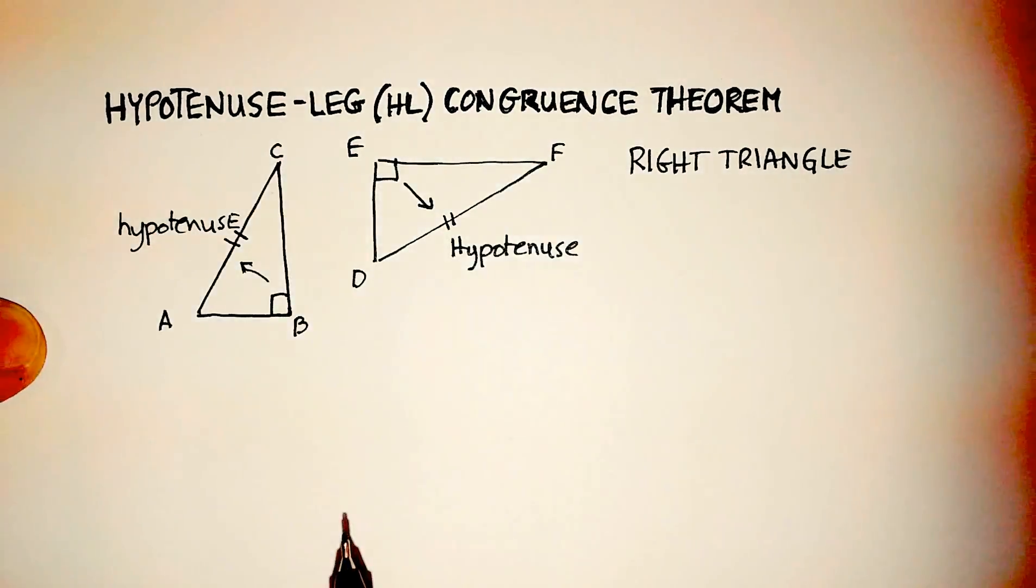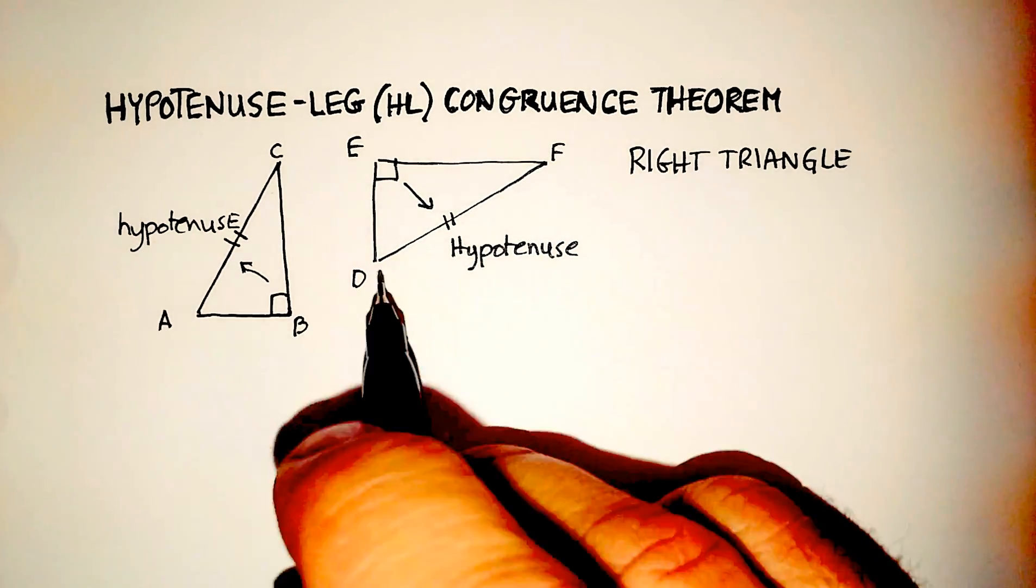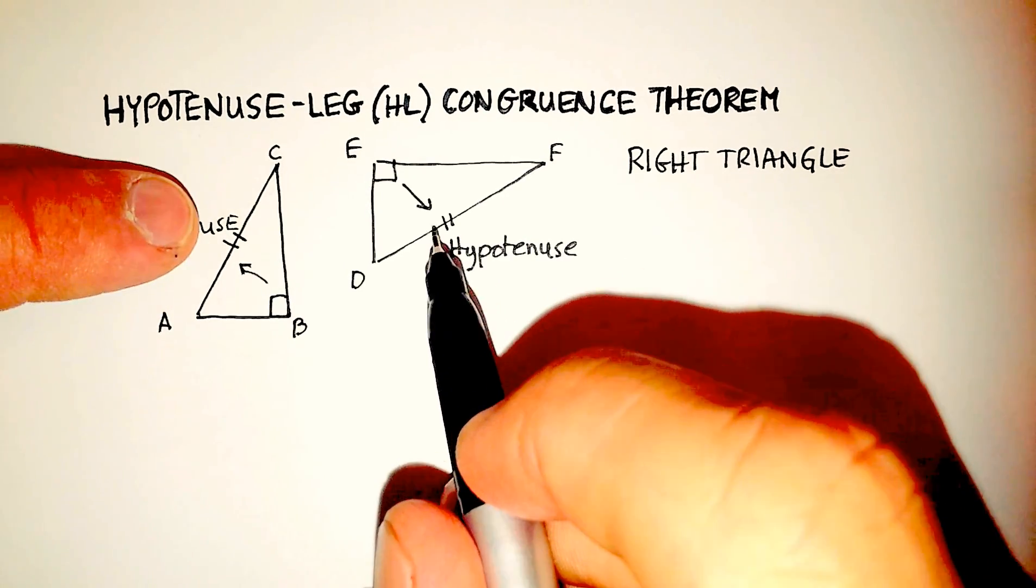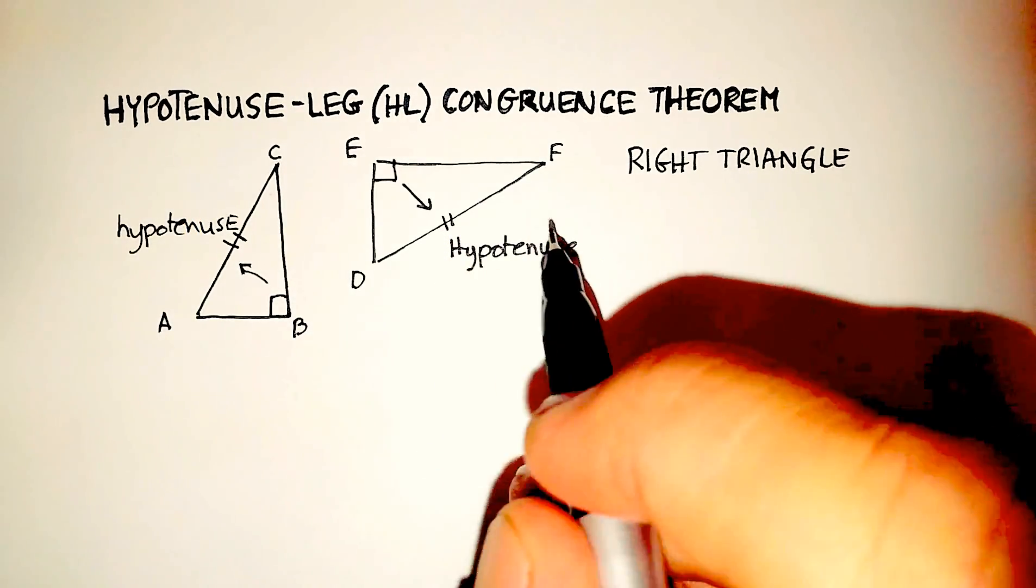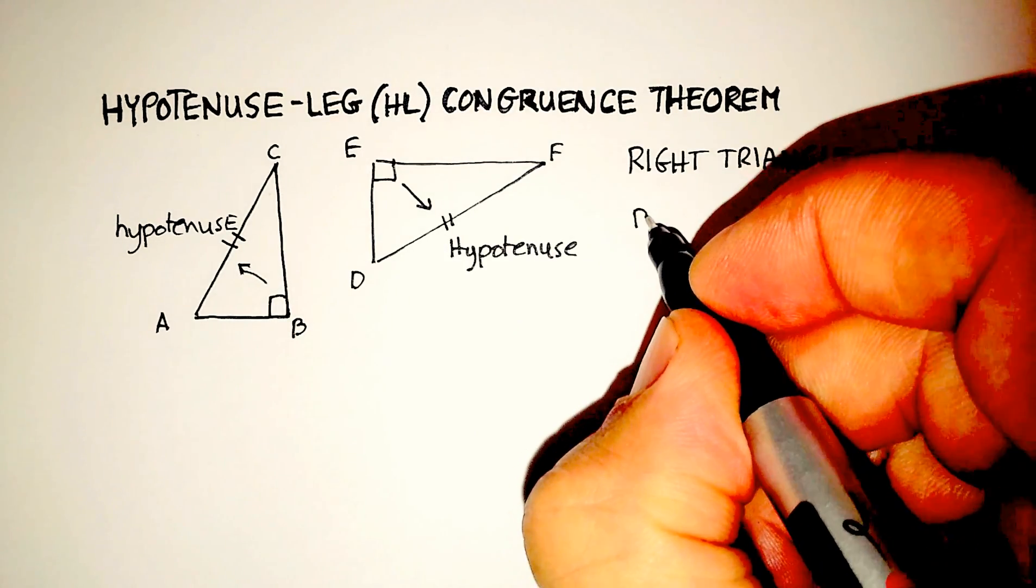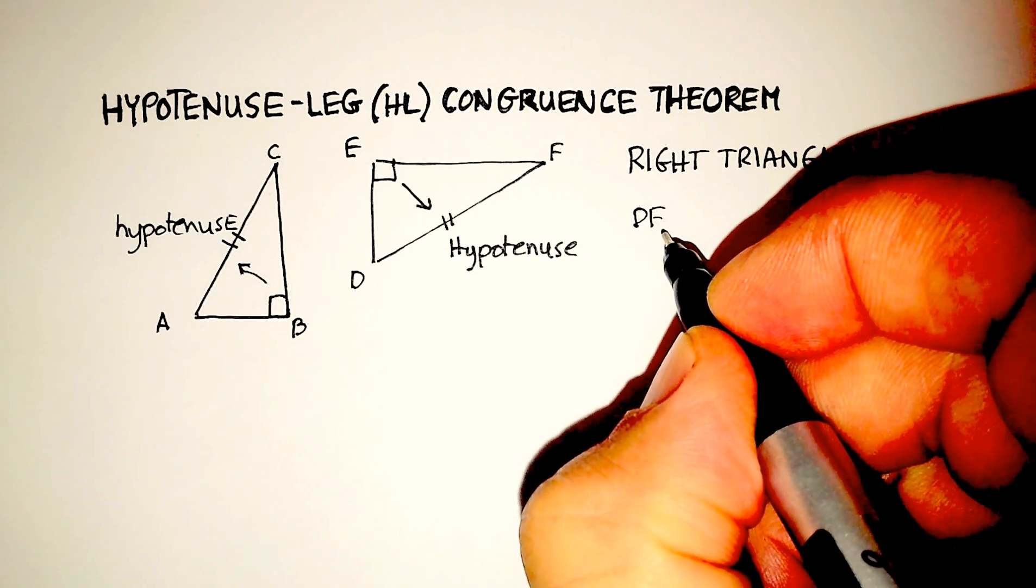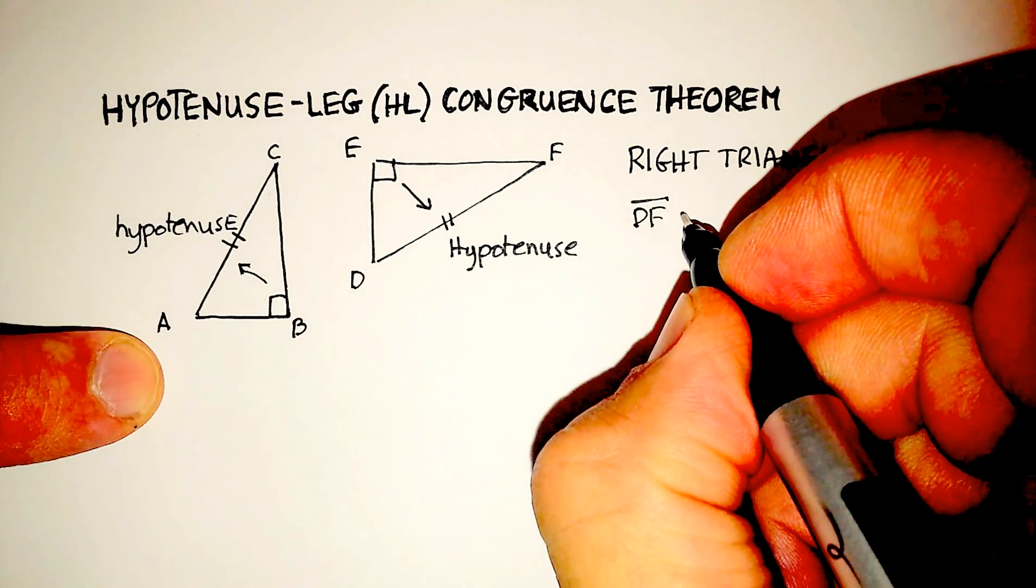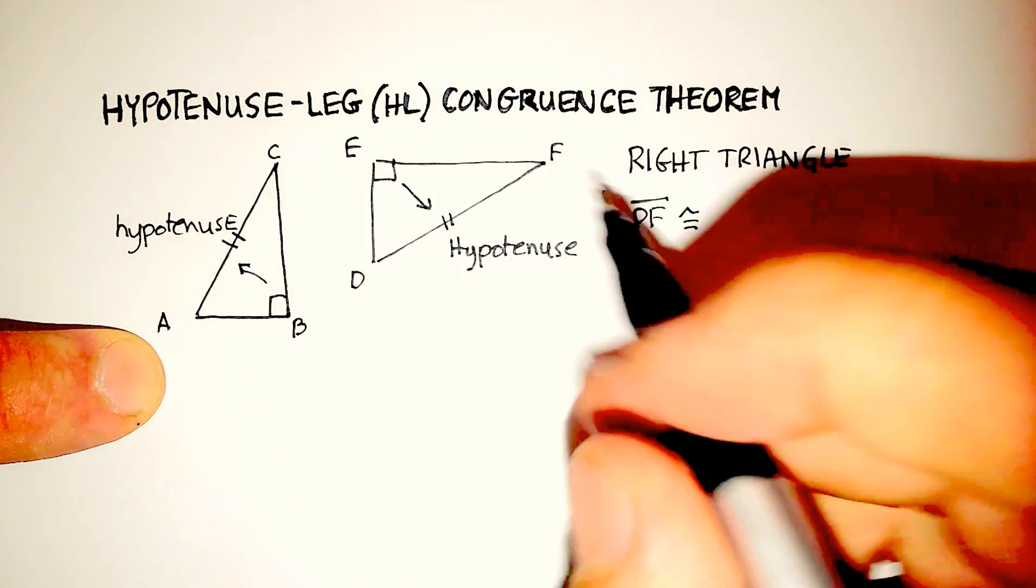Now this particular theorem says this. If you have a hypotenuse that's congruent in two different triangles, so in this case would be line segment DF is congruent with line segment AC.